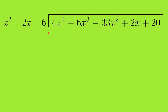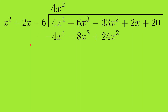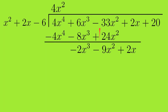What multiplied by x² equals 4x⁴? That is 4x². So we write 4x² in the quotient and multiply: 4x² times x² is 4x⁴, times 2x is 8x³, and times minus 6 is minus 24x². Switching signs and subtracting, we get minus 2x³ minus 9x², and 2x comes down.